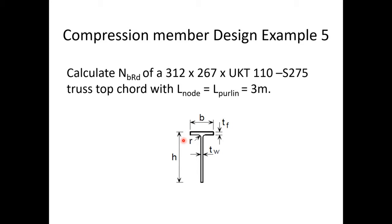The design steps are very similar to those used for the angle section. One added complication is that this section turns out to be a Class 4 section, which requires calculating an effective area. Unlike the equal angle section which was symmetrical about the major axis, this T-section is symmetrical about the minor (z-z) axis, which slightly changes some of the formulas.